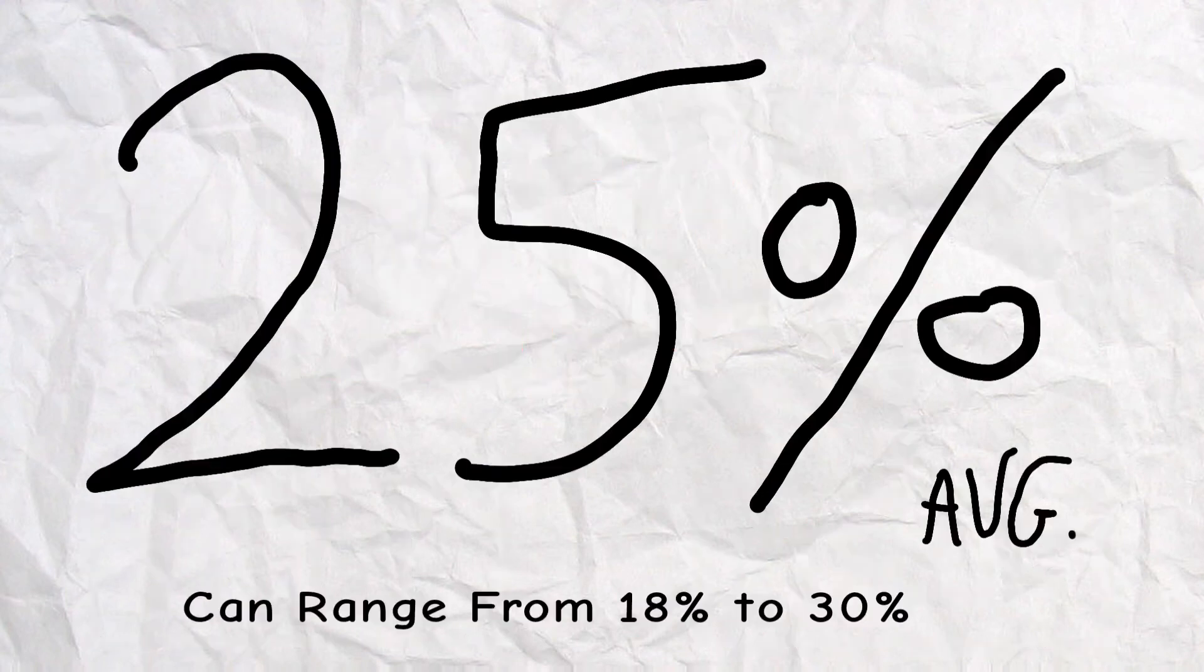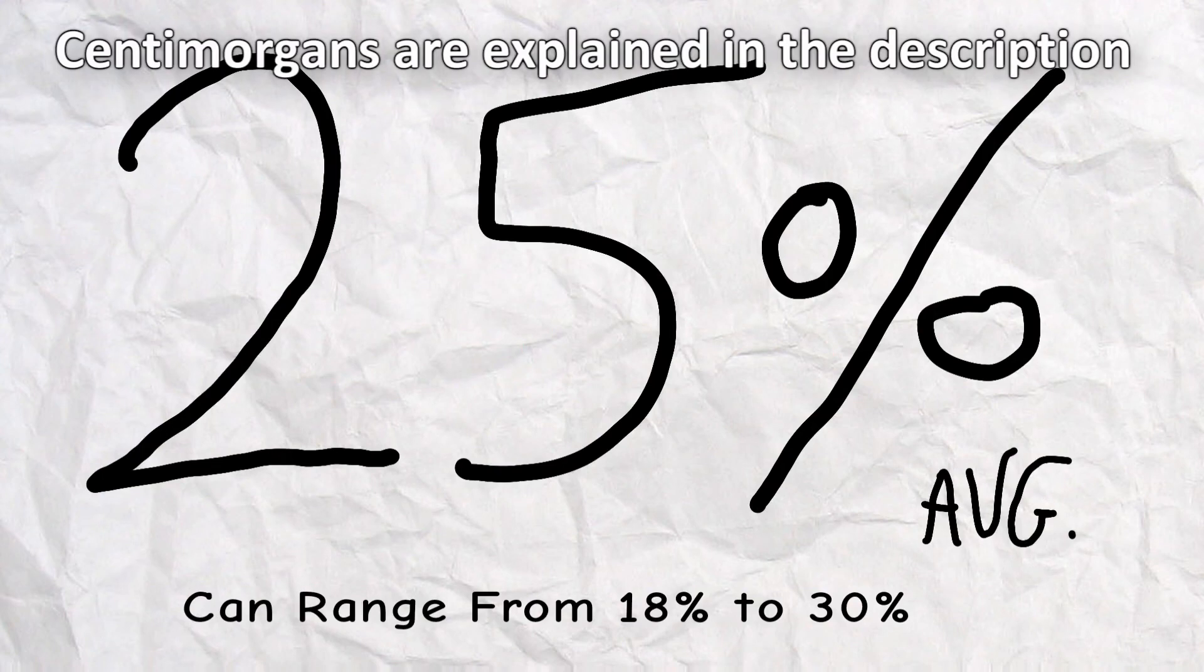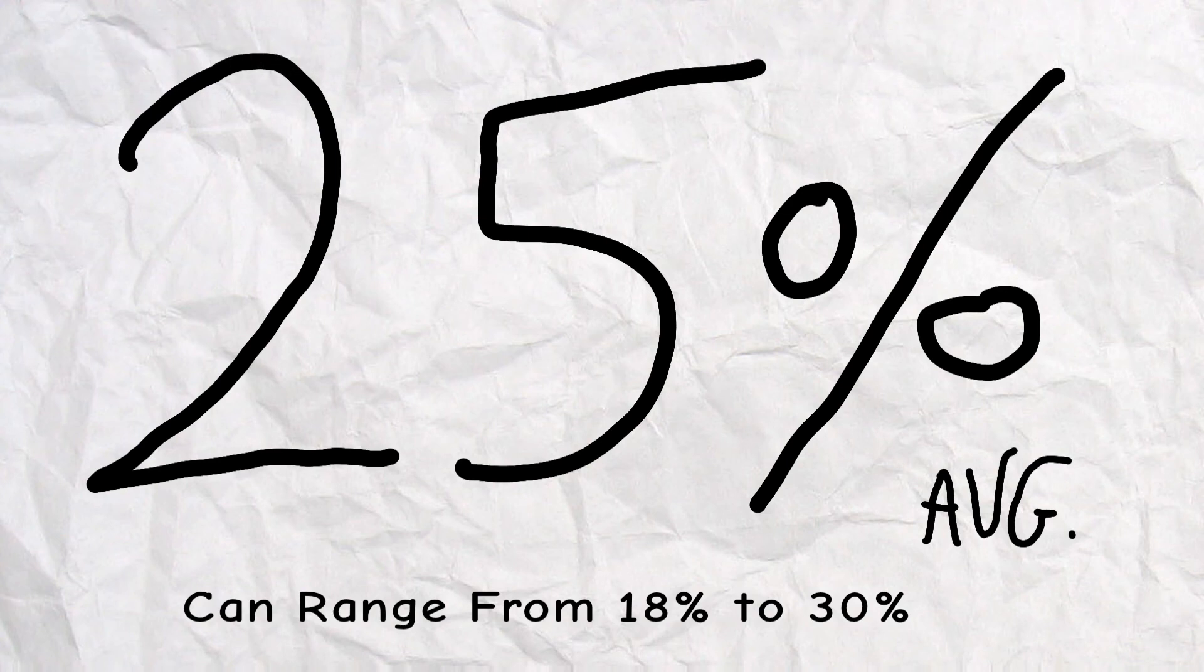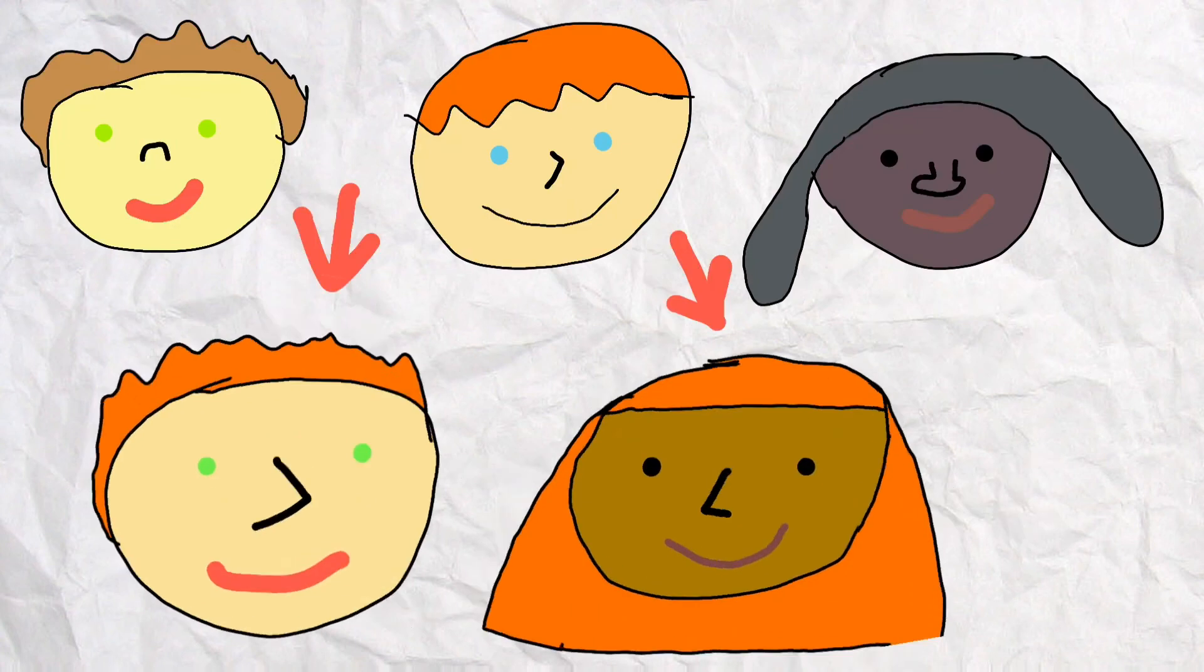Most half-siblings share an average of 25% of DNA with each other, ranging from 18% to 30%, but there are some exceptions where it can spread from 14% to 35%. DNA is indeed a funny one,